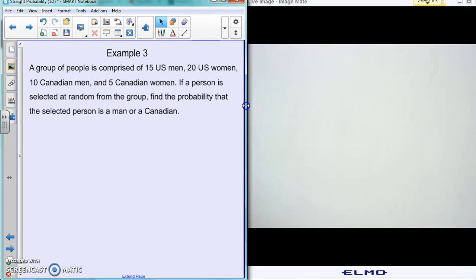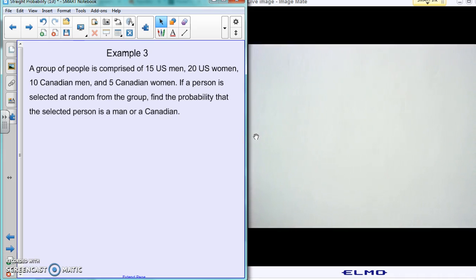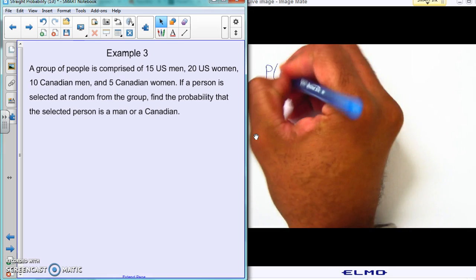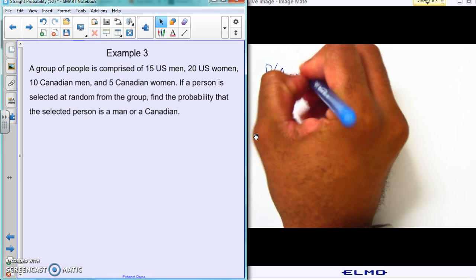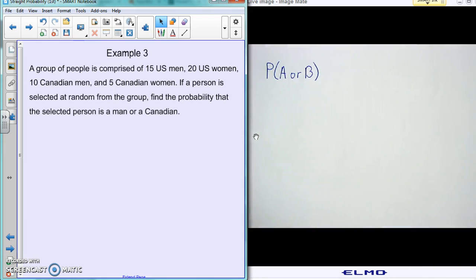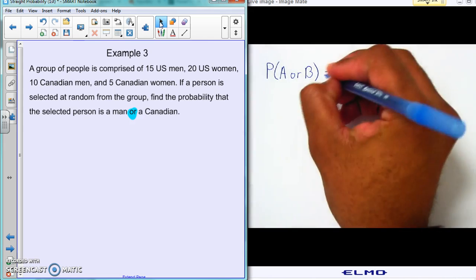With this, we're talking about again this formula because specifically in the problem it says 'or,' again or right here. And because it says or, we're using the or, but these things can happen at the same time - you can be a Canadian and a man at the same time.